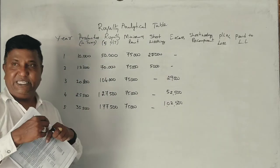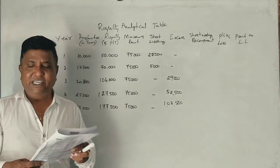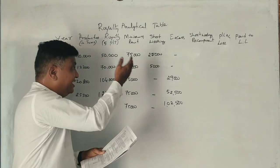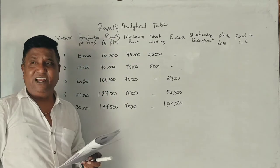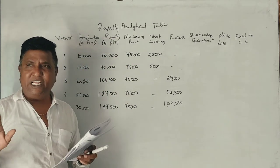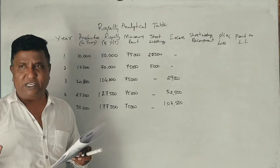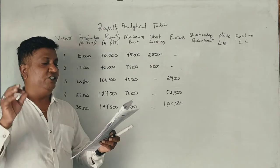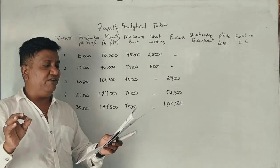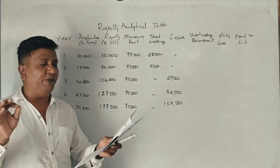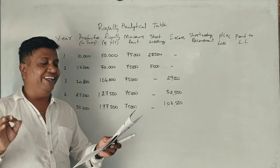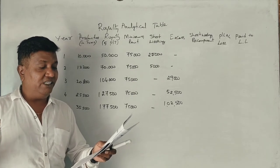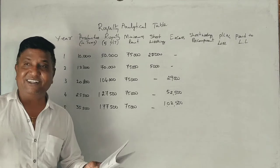Now, in short workings, the landlord is not required to pay less than the minimum rent, because short workings of the year can be recouped in the next two years out of excess royalty.